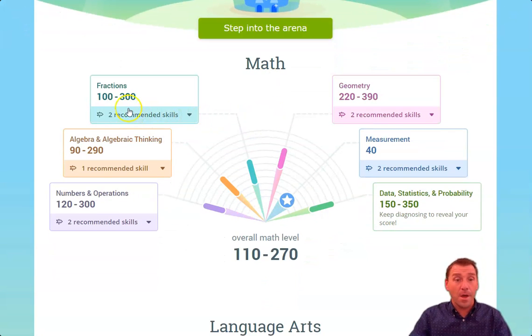All they have to do is find any of the strands, whether it's math or ELA, and find the recommended skills by just clicking on the words or the drop down. So you see fractions, for example, has two recommended skills.